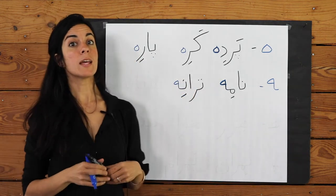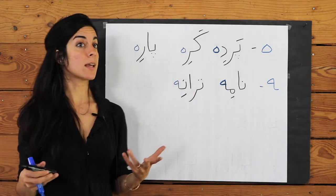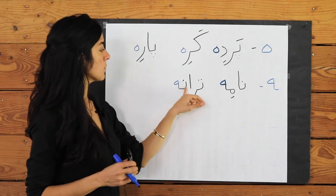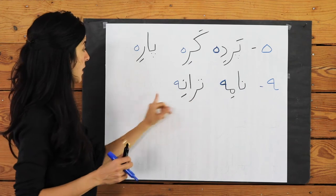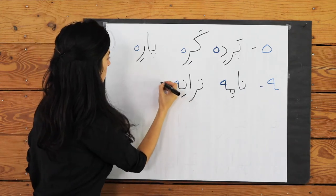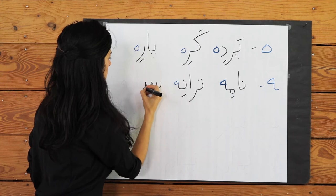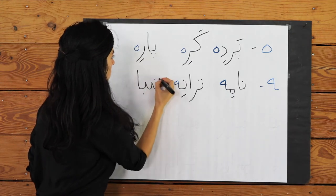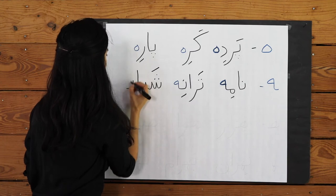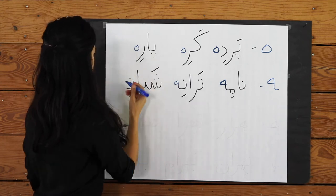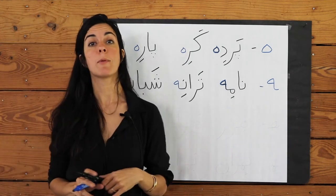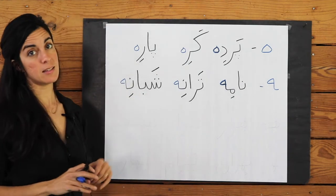Taraneh — a song — and again, we have that H at the end, connected to something before it but it is the last letter. Taraneh. And Shabaneh — nightly — same end-of-word connected form. Shabaneh.